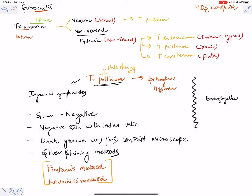Good morning friends. We're going to continue with the wind map, and first we need to learn about the term Treponema. Trepo means 'to turn' and nema means 'thread' — it looks like a thread. These are divided into two categories: venereal and non-venereal, which is also called endemic.